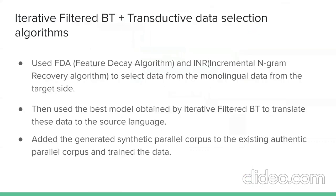For iterative filtered back-translation plus FDA/INR: the FDA or INR algorithm is used to select data from the target-side monolingual data. Then the best model from iterative filtered back-translation translates this data to the source language, and the generated synthetic parallel corpus is added to the existing authentic parallel corpus for training.